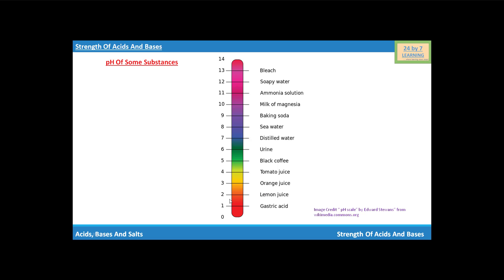Lemon juice will have pH value 2, and gastric acid of your stomach will have pH value 1. These are some substances of daily use which are showing their pH value on the pH scale.